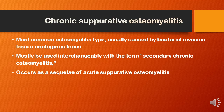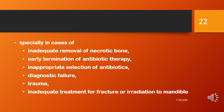Coming to chronic suppurative osteomyelitis, this is the most common osteomyelitis type, usually caused by bacterial invasion from a contiguous focus. It is mostly used interchangeably with the term secondary chronic osteomyelitis, and it occurs as a sequel of acute suppurative osteomyelitis. It occurs especially in cases of inadequate removal of necrotic bone, early termination of antibiotic therapy, inappropriate selection of antibiotics, diagnostic failure and trauma, and inadequate treatment of fracture or irradiation to the mandible.